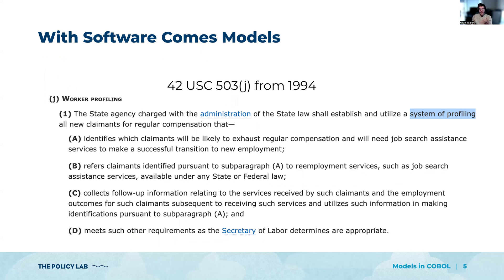The model might say this person looks like a fraudulent claim — you should ask them for more information or deny them benefits. Another thing it might do is say this person looks like they could use some resume help, and require them to go to resume help or deny them their benefits. These are different things that could happen with the outcomes of these models.